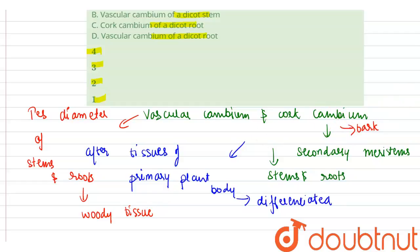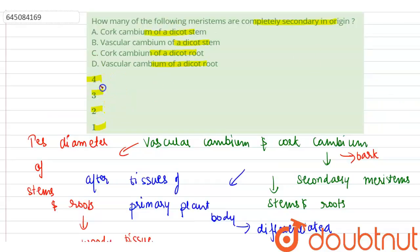So all these four are completely secondary in origin, as they are formed after the tissues of primary plant body are differentiated. So cork cambium of dicot stem, vascular cambium of dicot stem, cork cambium of dicot root, vascular cambium of dicot root - all of these are completely secondary or lateral in origin. Thank you.